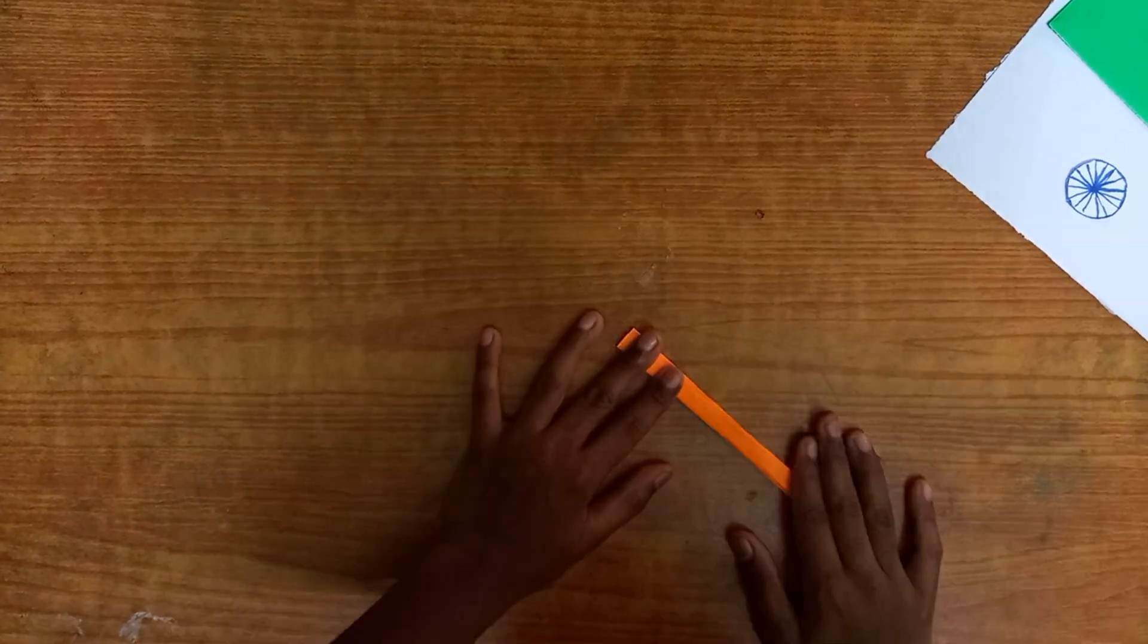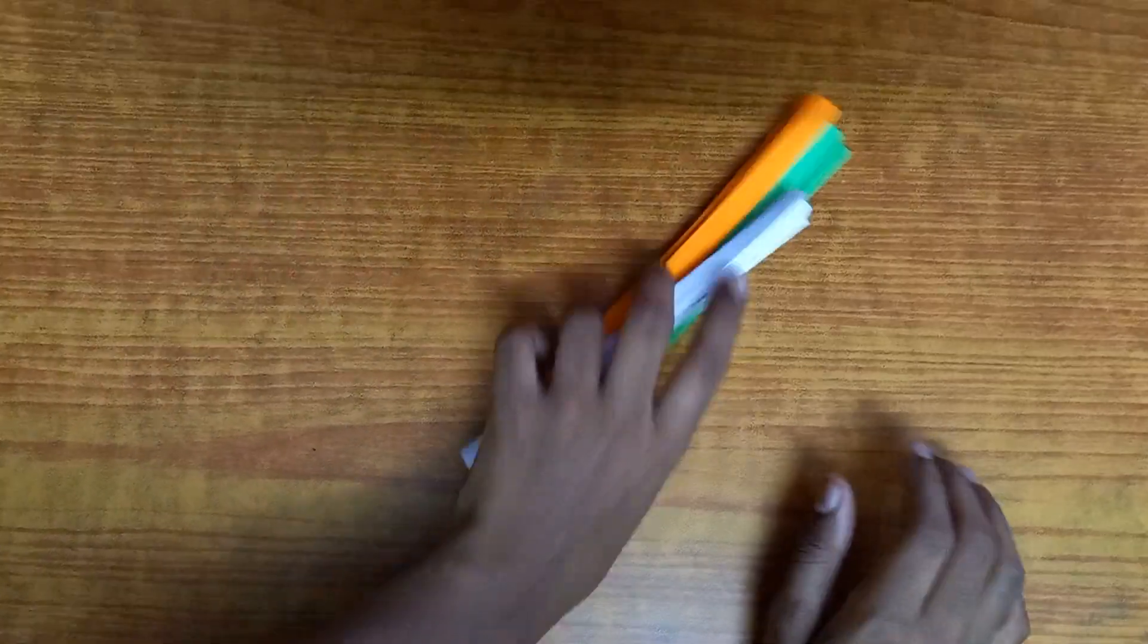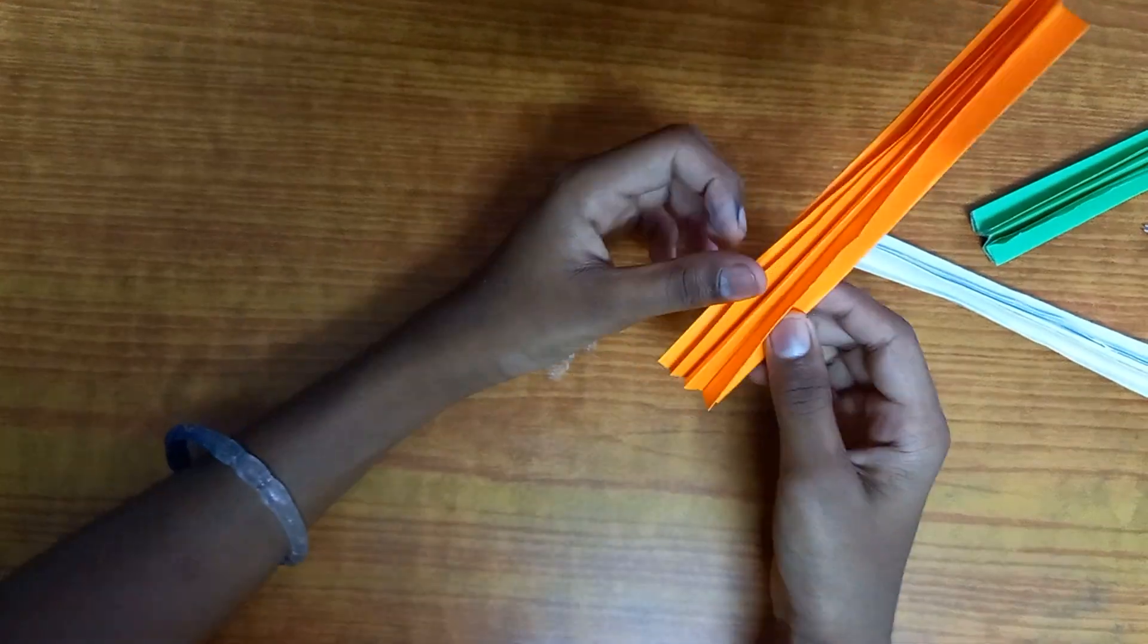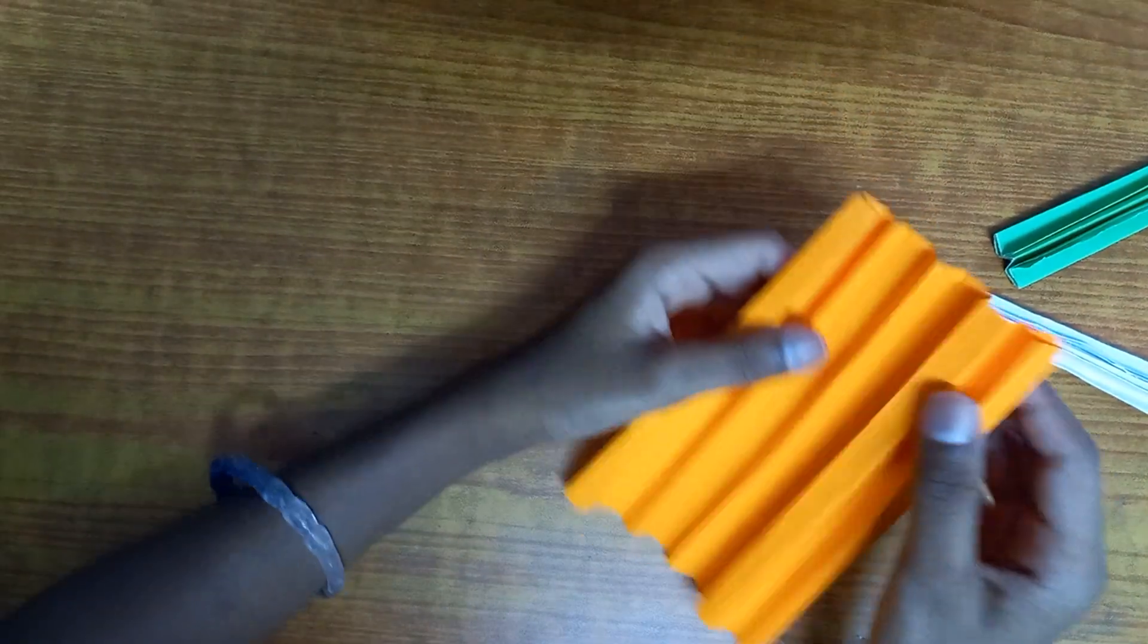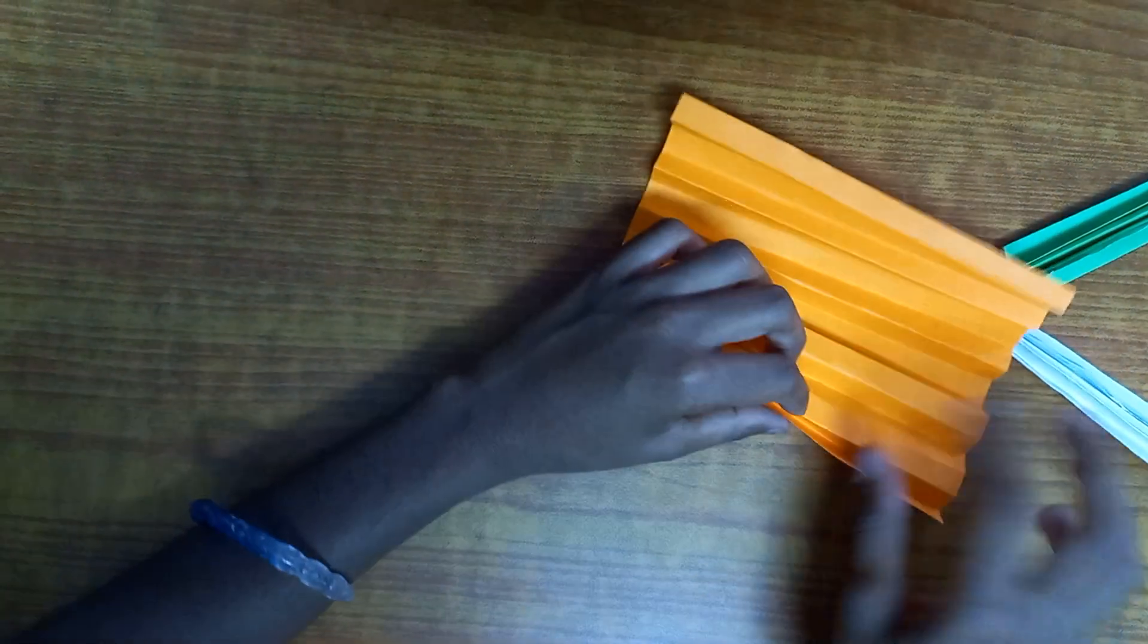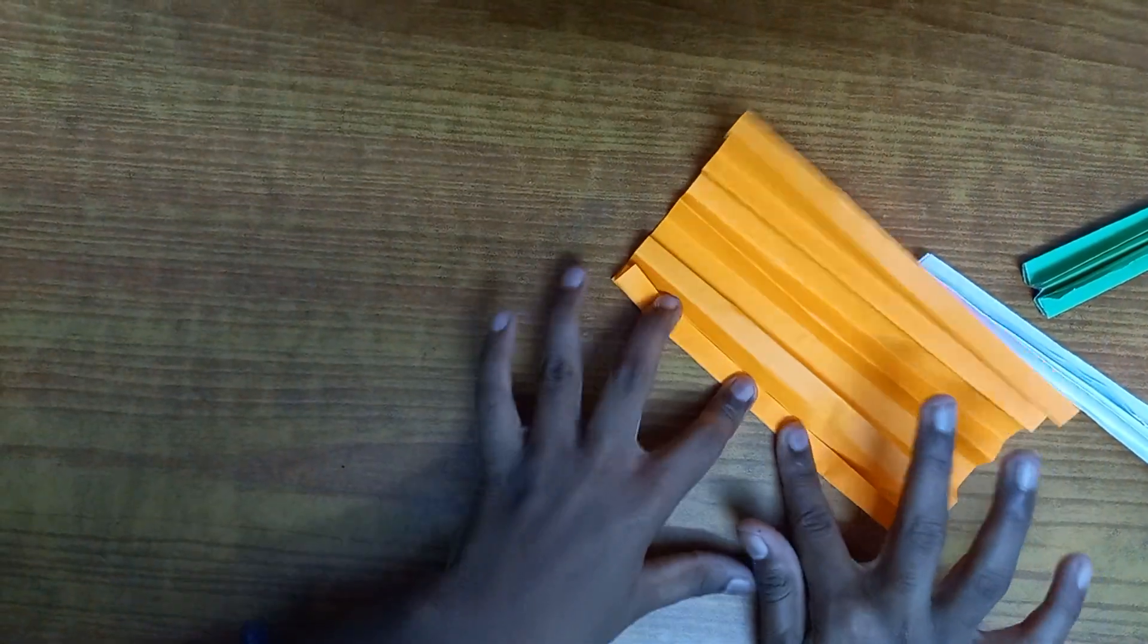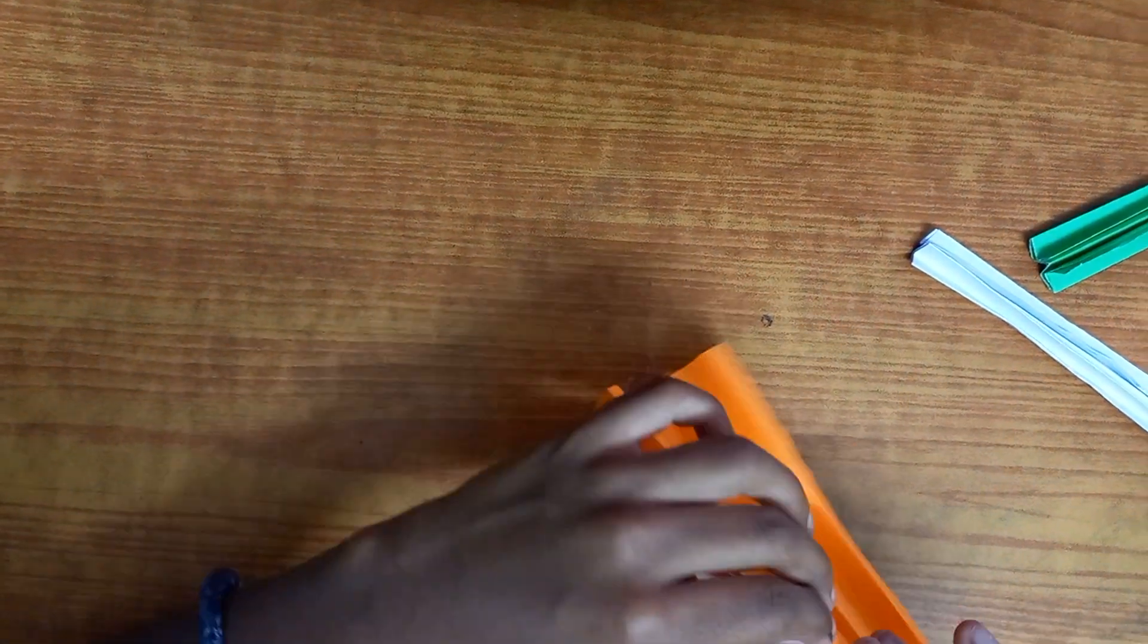Now repeat it with all the other sheets of paper. So once that is done, we take our orange sheet of paper and open it up. Open it all it can be. And you know how you're supposed to now fold it into a hand fan? I suppose everyone knows, right?